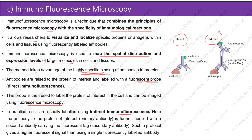In practice, cells are usually labeled using indirect immunofluorescence. Here, the primary antibody — which targets the protein of interest — is further labeled with a secondary antibody carrying the fluorescent tag. Such a protocol gives a higher fluorescence signal than using a single fluorescently labeled antibody.